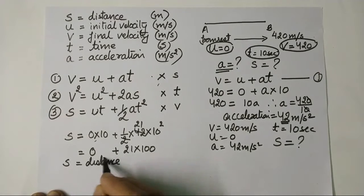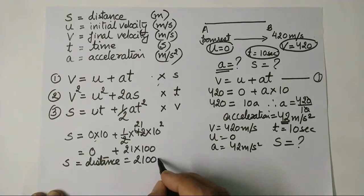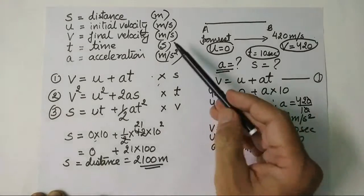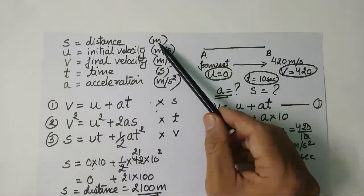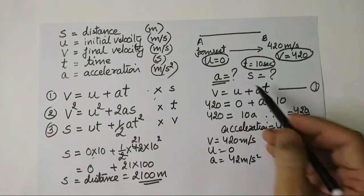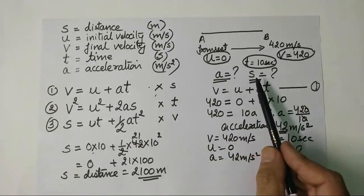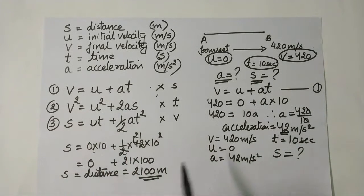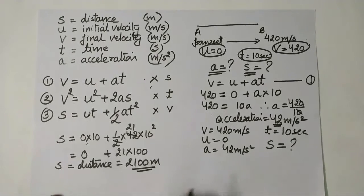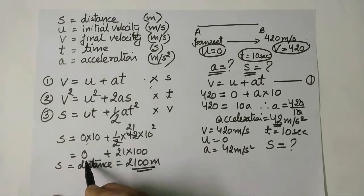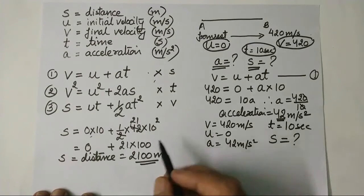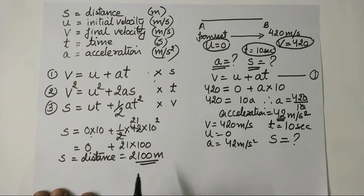The distance covered is s equals 2100 meters — meter is the SI unit of distance. We have now found u, v, t, a, and s using the three equations of motion. If you have any doubts or comments, leave them below the video. More questions will continue in the next module — stay connected, subscribe, and press the notification bell. See you in the next class, goodbye.